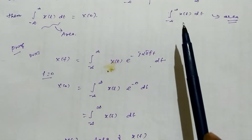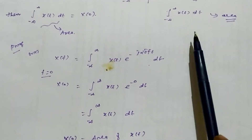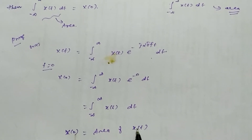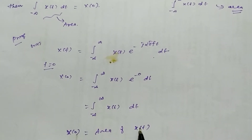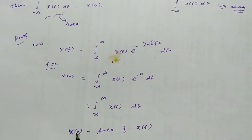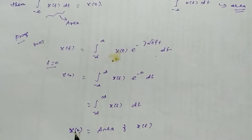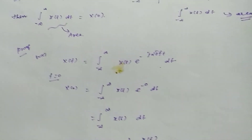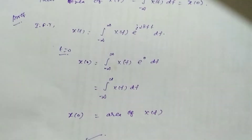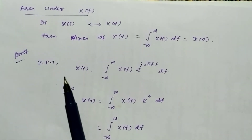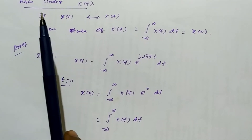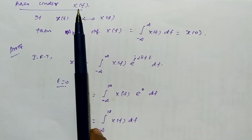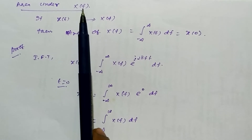So according to the mathematics formula, this is nothing but the area of that particular curve. The area of a particular curve can be found by replacing f equal to 0 in the given Fourier transform. This same method can also be utilized to find the area of X(f), that is, the Fourier transform of x(t).